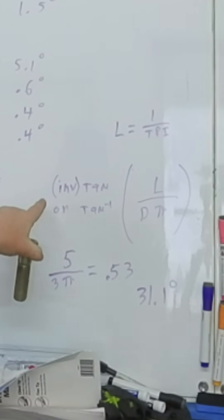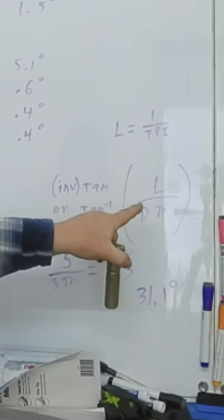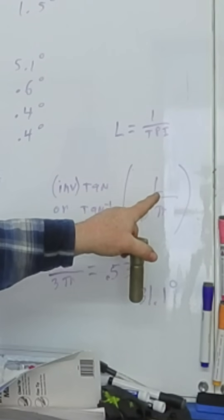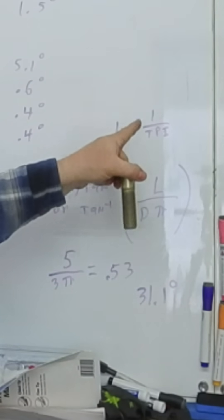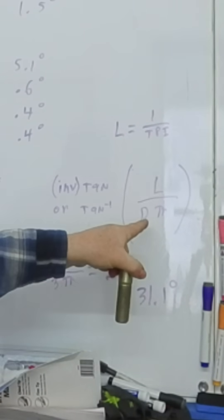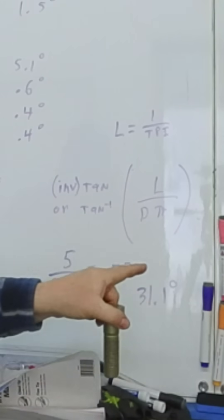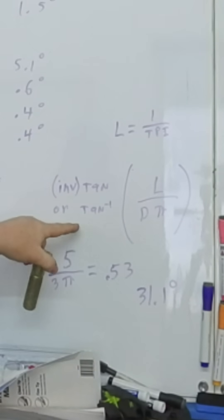Here is your formula. On your calculator, you're going to use inverse tangent or possibly tangent to the minus one. You're going to have your lead, which is just the inverse of your threads per inch, over your diameter times pi. Then you're going to look for your inverse tangent, and that will give you these answers.